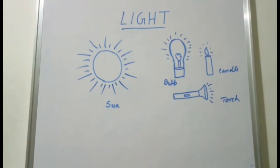Light energy is the most important energy of our life and the sun is the natural source of energy. Without it our world will be lightless. Light energy is a form of electromagnetic radiation. Light consists of photons which are produced when an object's atoms heat up. Light travels in waves and is the only form of energy visible to the human eye.